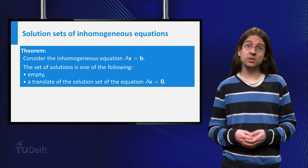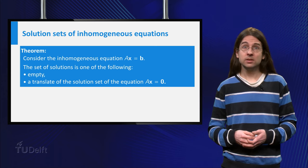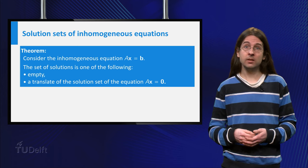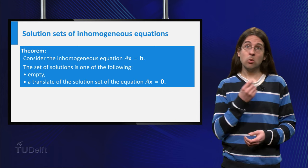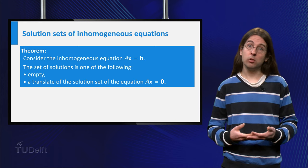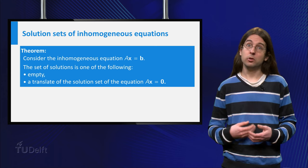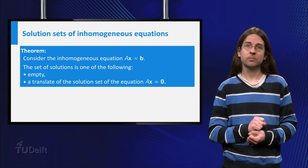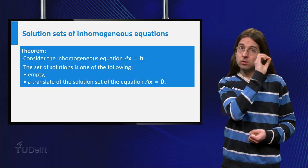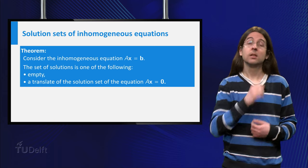Beware that an inhomogeneous system can be inconsistent. Thus we can conclude that the solution set of an inhomogeneous system is either empty, or that it is a translate of the solution set of the corresponding homogeneous system. The number of free variables in an echelon form then determines what the solution set looks like: if there are no free variables, the solution set is a single point; if there is one free variable, it is a line; if there are two free variables, it is a plane, etc.